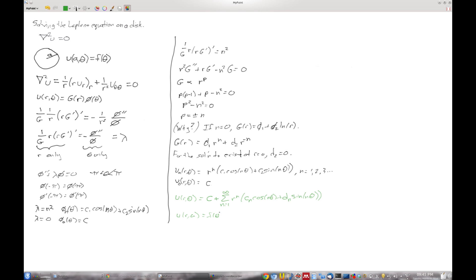Which is equal to a constant plus the sum from n equals 1 to infinity of a to the n. I know what a is, cn cosine of n theta plus dn sine of n theta.